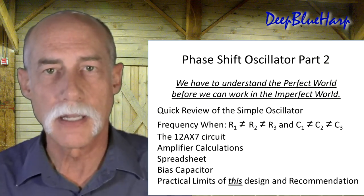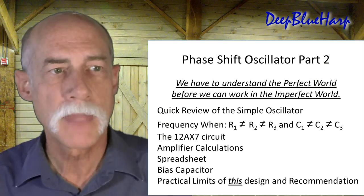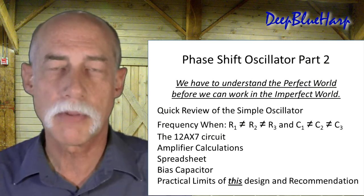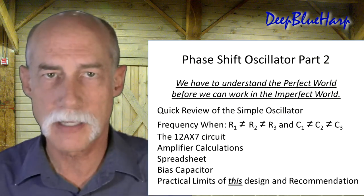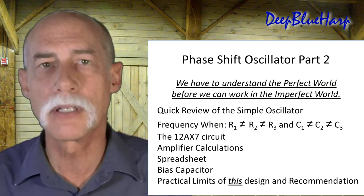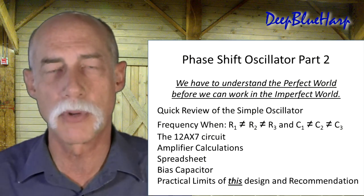This is the basic 12ax7 series oscillator. We'll go through the amplifier calculations, the spreadsheet, how to set the bias capacitor, and practical limits of this design, and any other recommendations I would have for you.